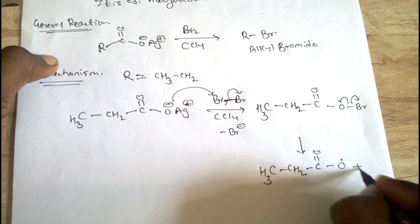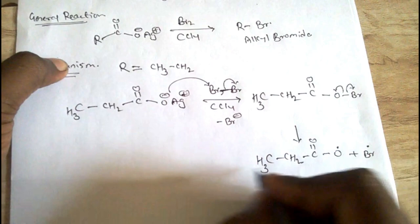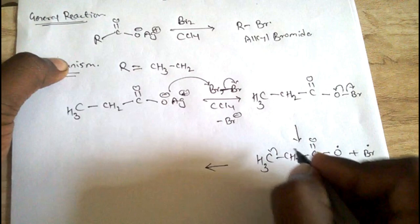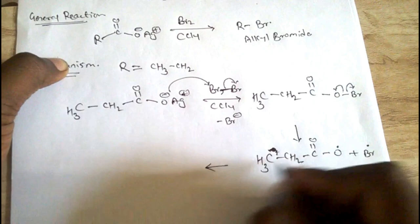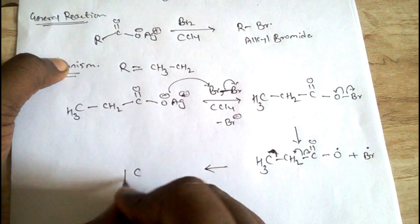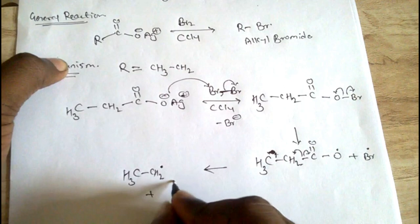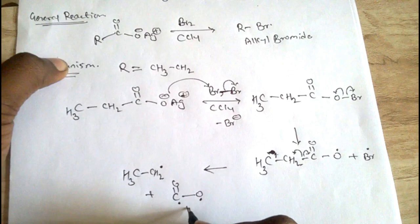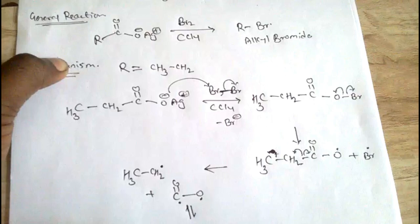Now in the second case, this carbon undergoes homolytic fission. We get CH₃CH₂• plus COO•, and this equals CO₂, it means it is CO₂.